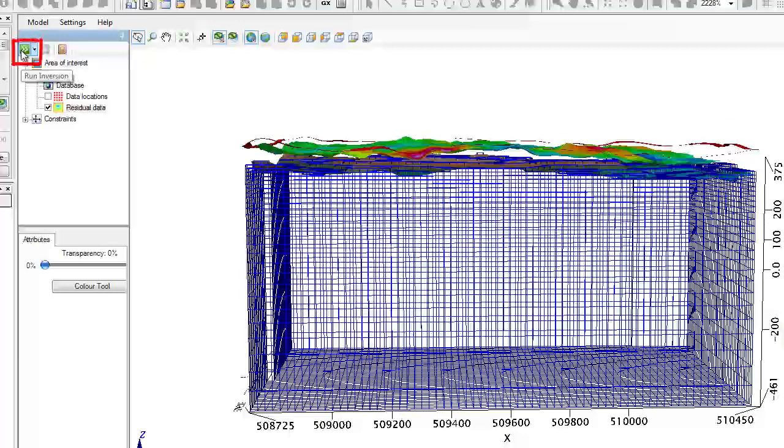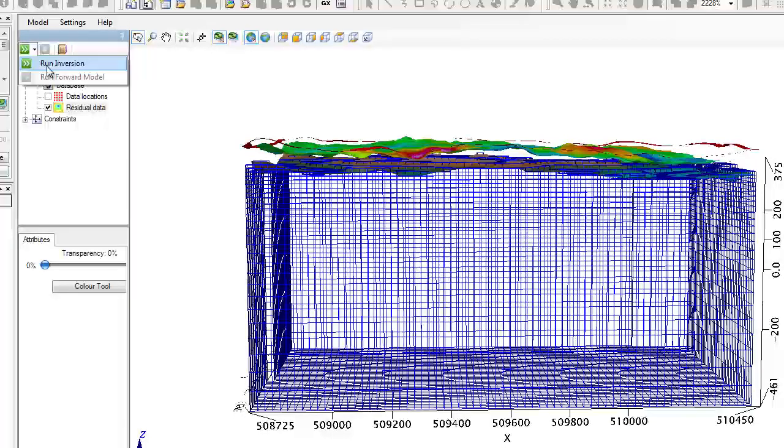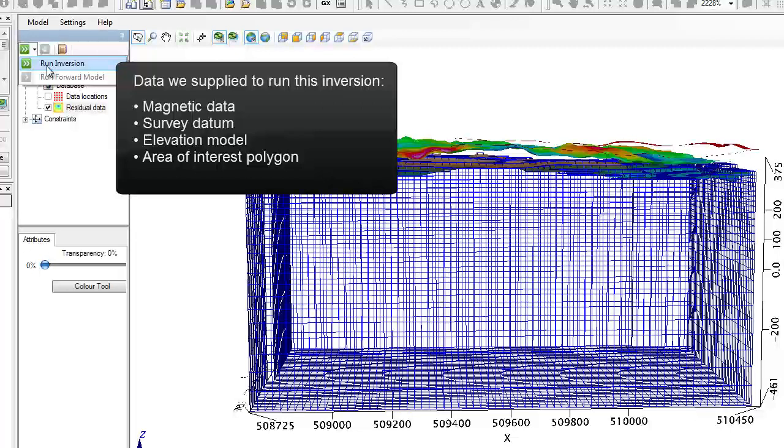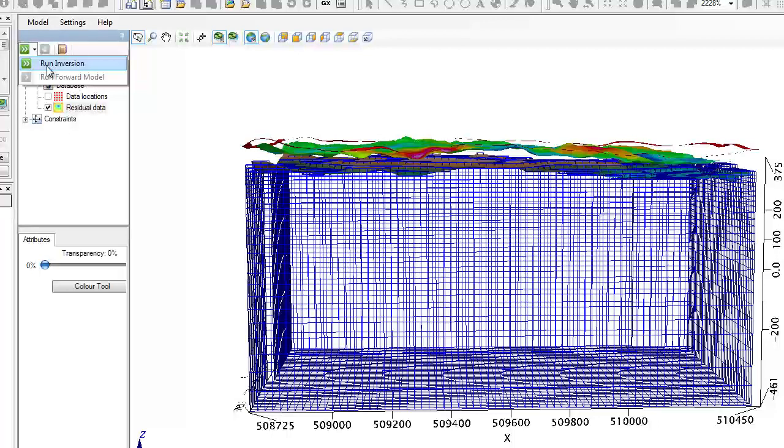I can go and model the susceptibility property of this volume of earth. All the magic happens right here. I am ready to run the inversion. Would I not have supplied all the necessary information? The run inversion would have been disabled. The fact that I can run it tells me we have all the information we need. Note we supplied the magnetic data, the data at which it was surveyed, the elevation model, and we defined the area with the polygon. Those are the only entries that I had to key in.